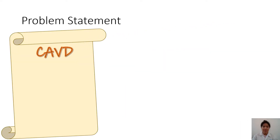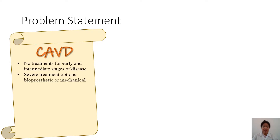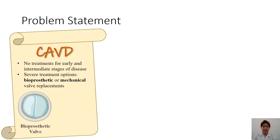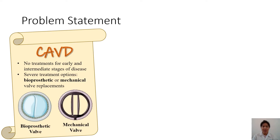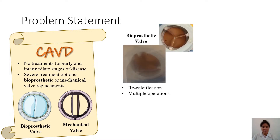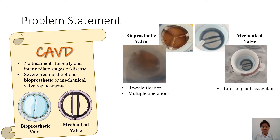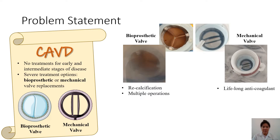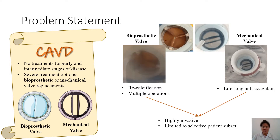Current treatment options for early stages of CAVD are not available. Severe treatments include bioprosthetic or mechanical valve replacements. Bioprosthetic valves are prone to recalcification and may need multiple operations, and mechanical valves require patients to be on lifelong anticoagulants. Both cases are invasive and therefore are limited to a selective patient subset.